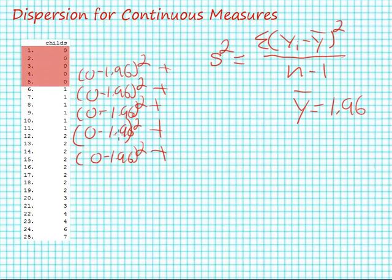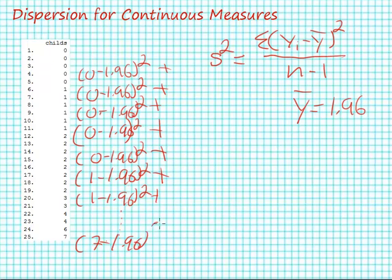And that handles the first five cases. Then I move on to the sixth case, which is going to be 1 minus 1.96 squared. And the seventh case, 1 minus 1.96 squared, and so forth till I get to the end where I'm going to have 7 minus 1.96, the quantity squared.